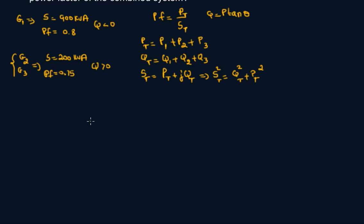So now I'm going to calculate Pt and Qt. P1, the formula for power factor is P over S, so your real power would be apparent power times your power factor. For generator 1 it'll be 900 times 0.8, and that equals 720 kilowatts.